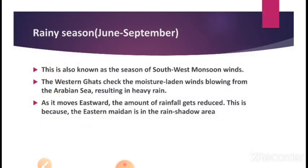The second climatic season is the rainy season, from June to September. It is also known as the south-west monsoon winds, because during this season, winds blow from south-west to north-east — from the Arabian Sea toward the northeast. Karnataka receives its highest rainfall of 80% during the rainy season.